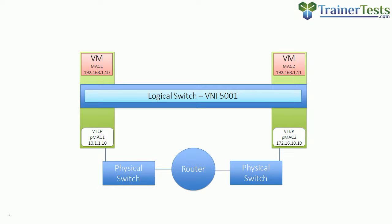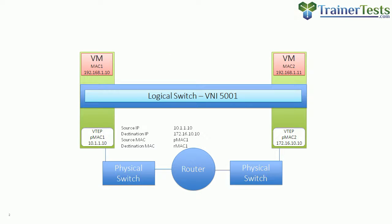Let's follow a packet as it flows from one virtual machine to another. The VM on the left, 192.168.1.10, wants to ping the VM on the right. The source IP is the sending VM's address, the destination IP is the receiving VM's address. They're on the same network, so no default gateway is needed. The source MAC is the first VM's MAC and the destination MAC is the receiving VM's MAC.